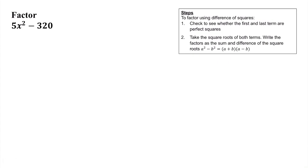Let's look at this one: 5x² - 320. You may be looking at this and wondering what's going on because both these numbers are not perfect squares. But remember, we can also look for a GCF whenever we're working on factoring problems. If I look at both 5 and 320, notice that they have a GCF of 5.